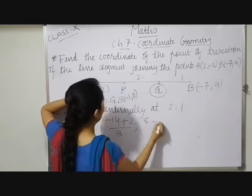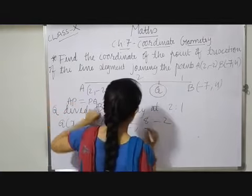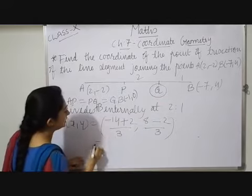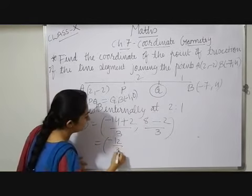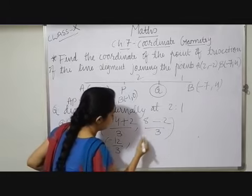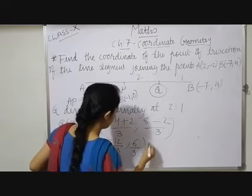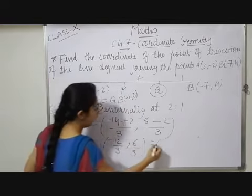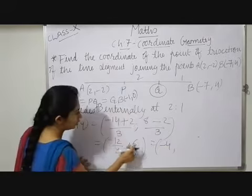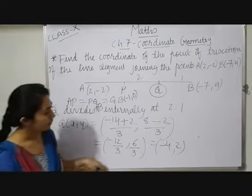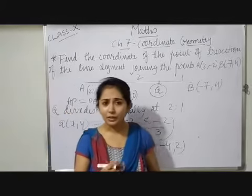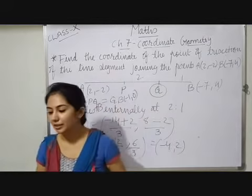So which is equals to -14 plus 2 will be -12 by 3. 8 minus 2 will be 6 by 3. So which is equals to 3 fours are, so -4, 3 twos are, so this is your Q coordinate. Like that you can solve it. Now I will solve next question here.